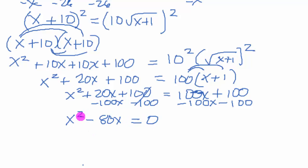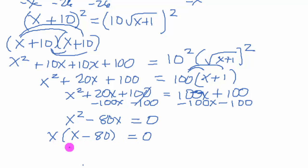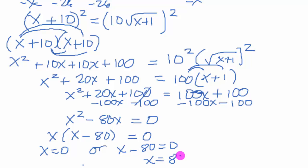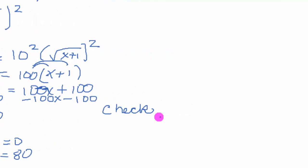To factor x squared minus 80x, there's a GCF of x, so we factor to get x(x minus 80) = 0. Setting each factor equal to 0: x equals 0, or x minus 80 equals 0, which means x equals 80. With these equations you do want to check your answer because sometimes you have extraneous roots — solutions that don't work. We need to check both back in the original. We're going to check x equals 0 and x equals 80.